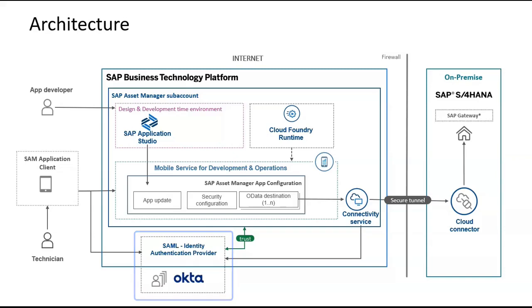Authentication to an individual component served by mobile services does not ensure authentication to a back-end service. To propagate the authentication to the back-end service, turn on principal propagation of the destination that is set as the back-end connection of the application.